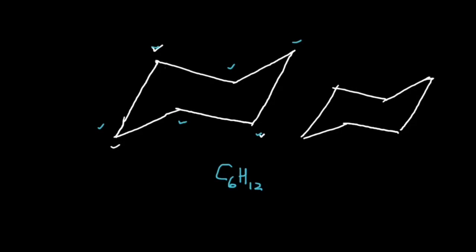both represent the chair conformer for cyclohexane. The process by which I converted the first structure into the second one, or vice versa, is what we call a ring flip.